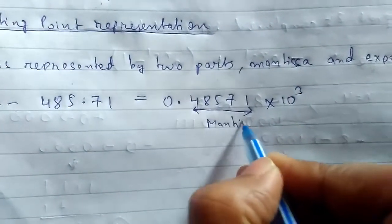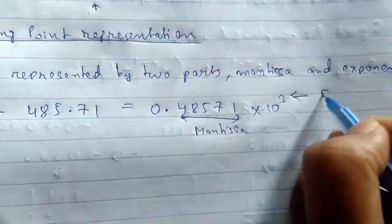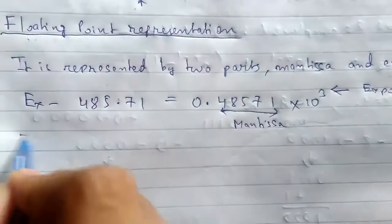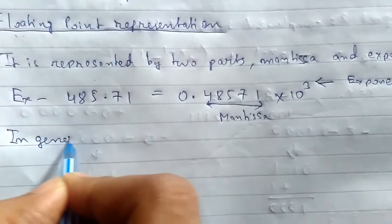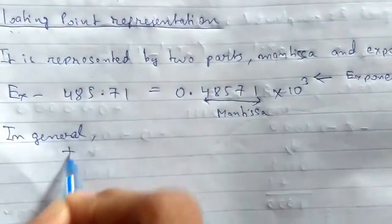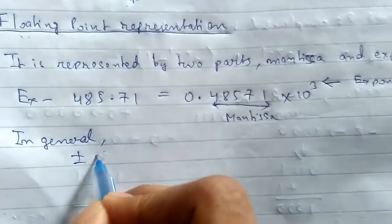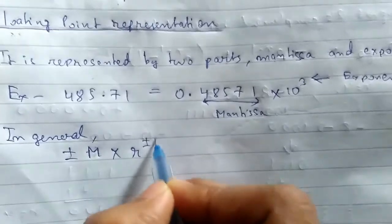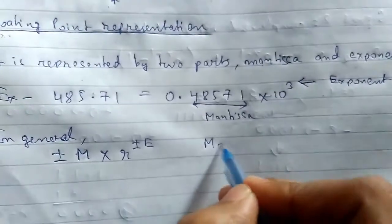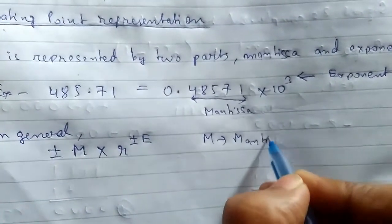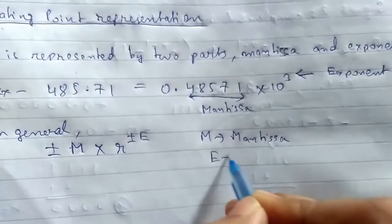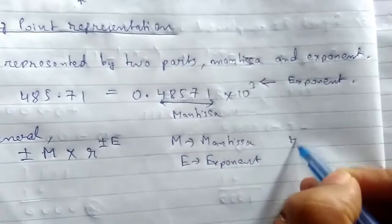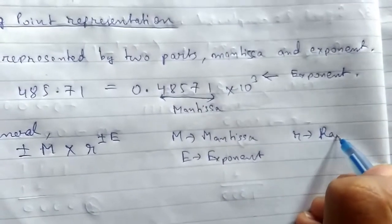In general, the floating point representation can be written as plus minus M times r to the power plus minus E, where M is the mantissa, E is the exponent, and r is the radix or base.